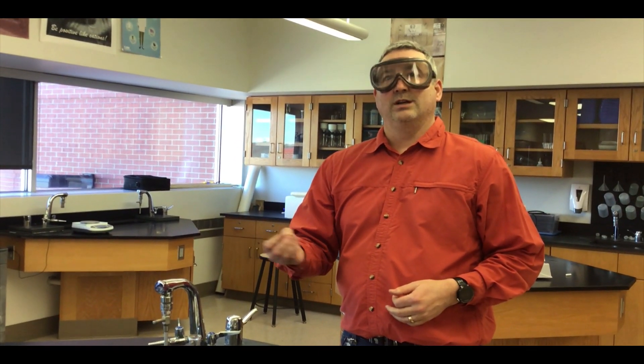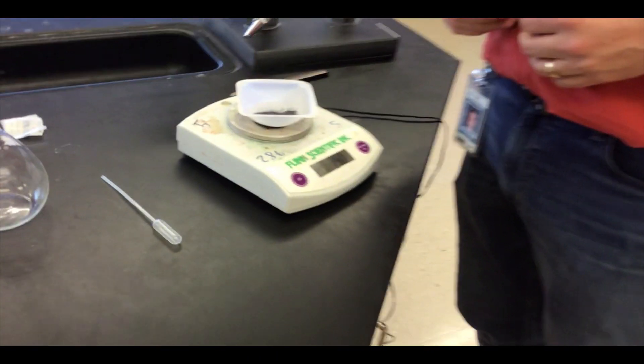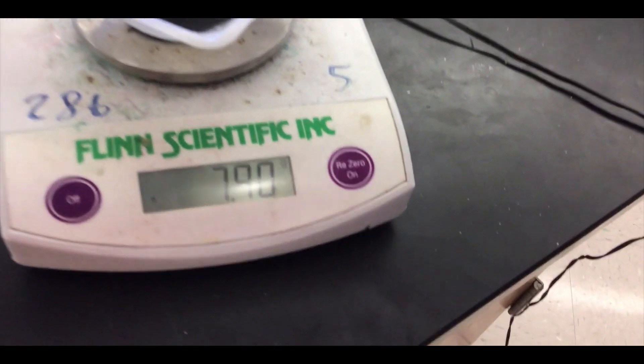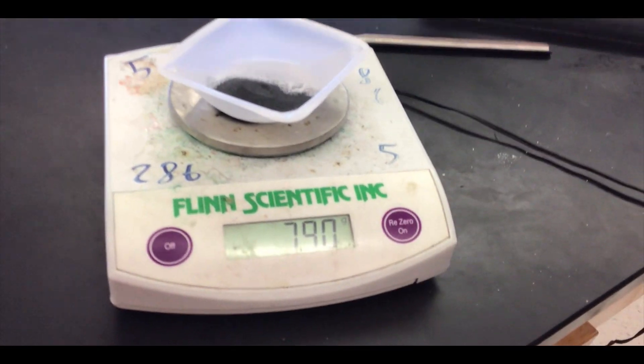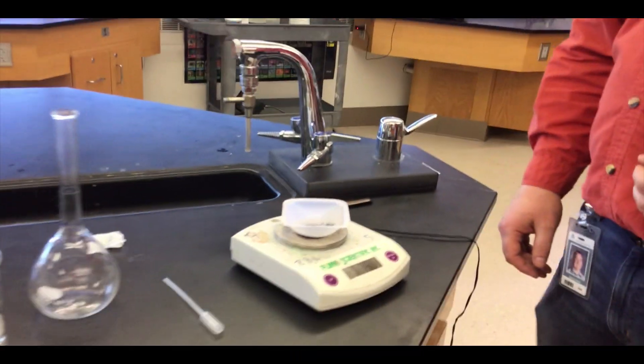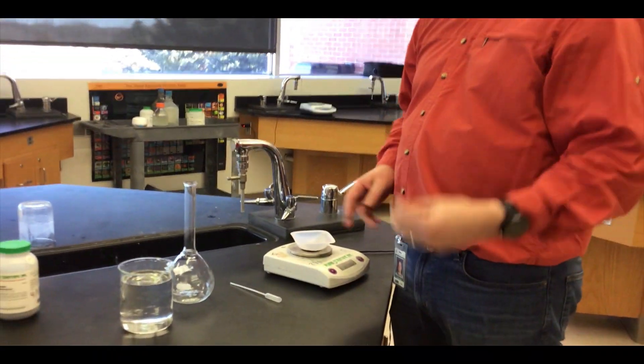We're making a specific molarity so we calculated what mass of potassium permanganate we need, which is 7.9 grams of potassium permanganate per 500 milliliters. We've done the stoichiometry to figure out that we need the 7.9 grams of potassium permanganate.